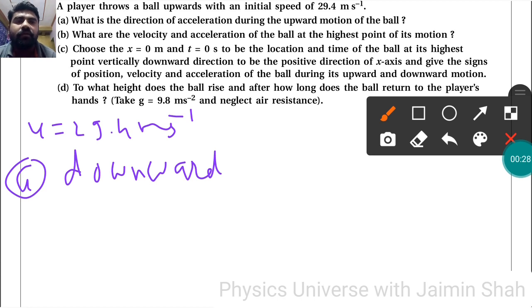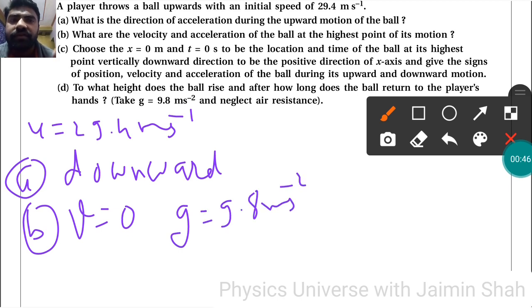Then part b: what are the velocity and acceleration of the ball at the highest point of its motion? So always at the highest point, velocity will be zero and acceleration remains constant - it is 9.8 m/s² throughout the journey.